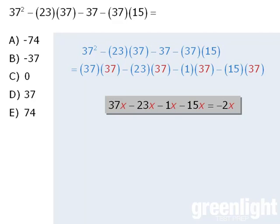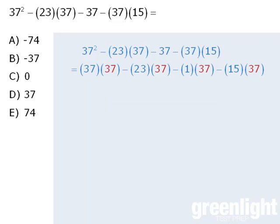We can use the same techniques to simplify our expression involving 37s. 37 37s minus 23 37s is equal to 14 37s. When we subtract 1 37 we get 13 37s.